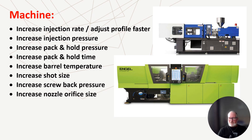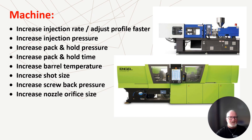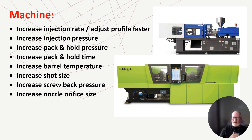If you've already addressed the mold and material and you're still having issues, here are things you can do on the process side: increase injection rate, adjust profile faster, increase injection pressure, increase pack and hold pressure, increase pack and hold time, increase barrel temperature, increase shot size, increase screw back pressure, and increase nozzle orifice size. Essentially, it's about increasing everything — getting material in as quickly as possible so it flows around bosses faster, which reduces the turbulent flow appearance.